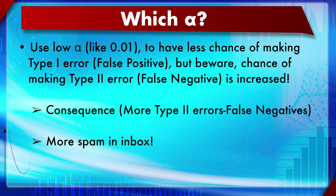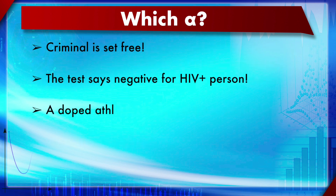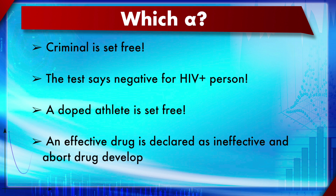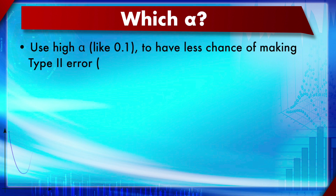Examples of Type 2 (false negative) errors include: more spam appearing in your inbox, a criminal being set free, an HIV-positive person testing negative, an athlete who doped being cleared, or an effective drug being declared ineffective and its development aborted. All of these are harmful outcomes.